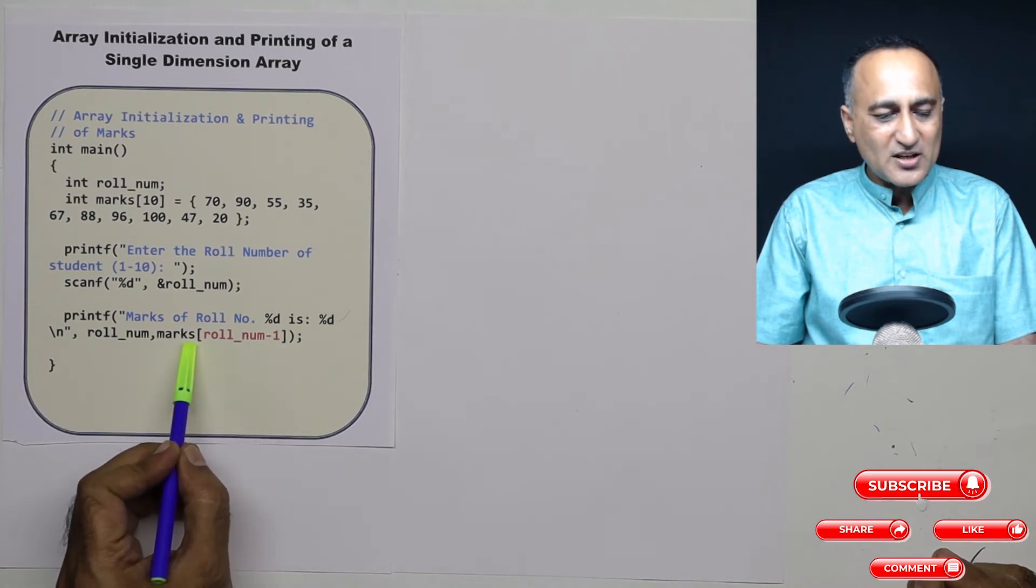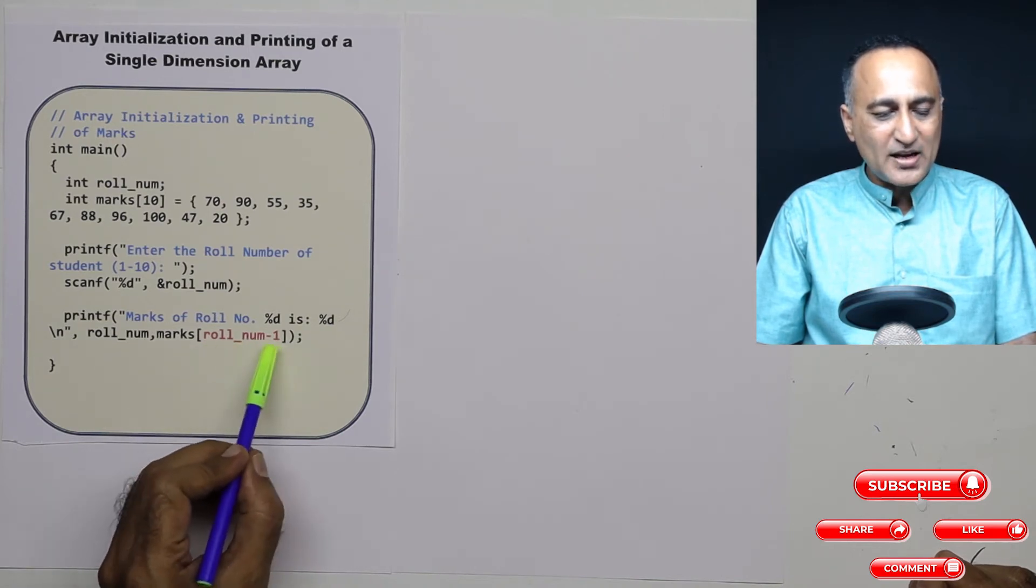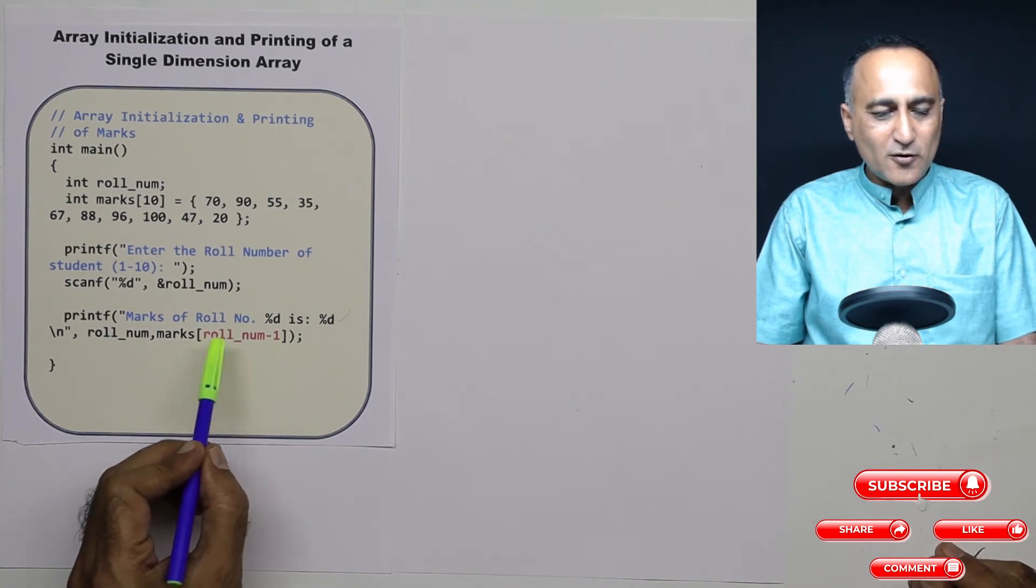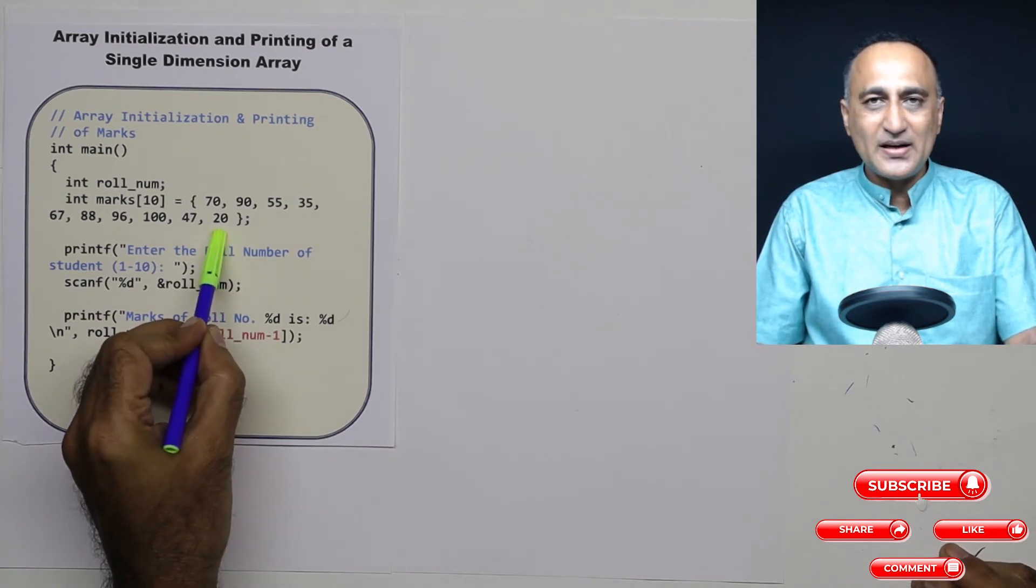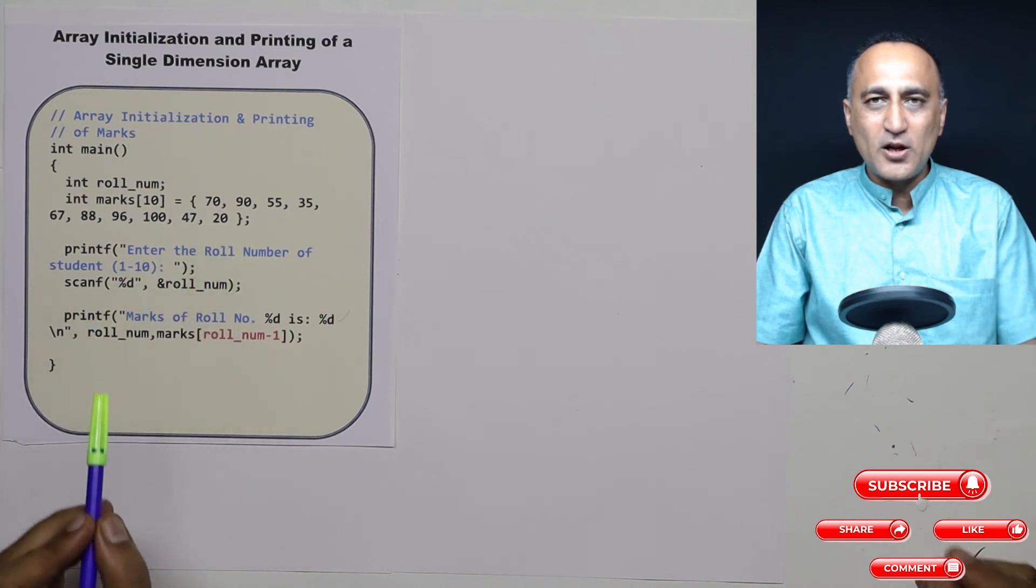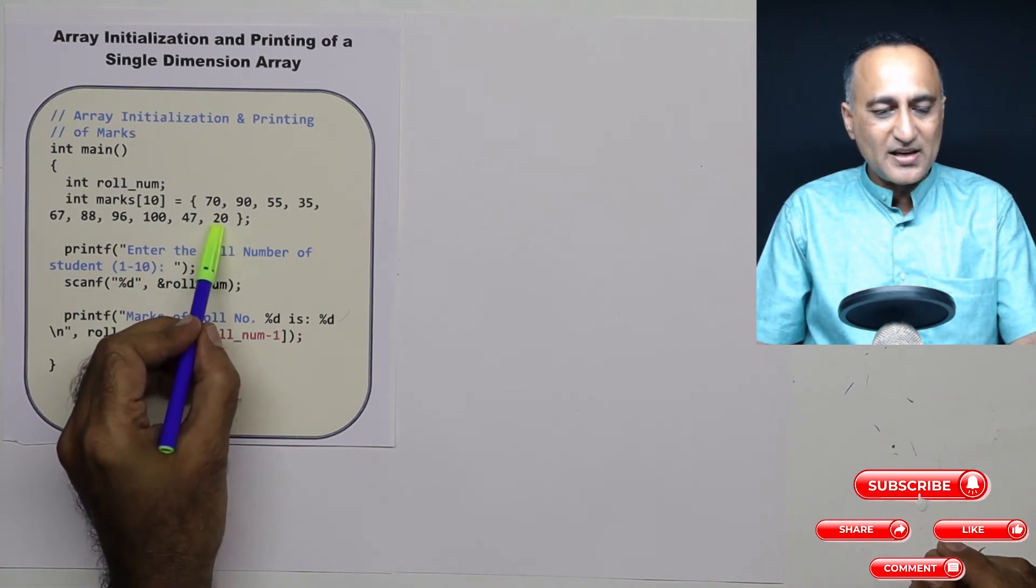So roll number 10 indicates actually position 9. So I am going to print as 20. So the marks of roll number 10 is actually going to print as 20.